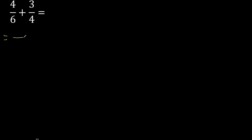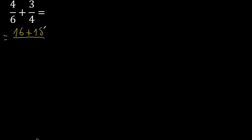First, multiply like this: 4 multiplied by 4 is 16, 6 multiplied by 3 is 18, 6 multiplied by 4 is 24.